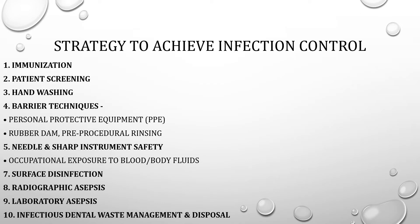What is the strategy to achieve infection control? The strategies include: immunization, patient screening, hand washing techniques, direct techniques like PPE and the use of barriers, pre-procedural rinsing, and needle and sharps safety. There are a lot of instruments like sharp needles and bladed instruments we are handling. Occupational exposure to blood and body fluids is a major concern. When instruments are sharp there will be higher chances of transmission of blood and body fluids, so we must take more care with these things. And surface disinfection is also important — the patient touches the dental chair, the tumbler, all these things.